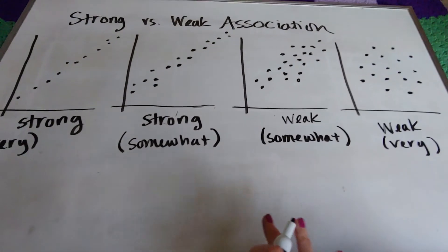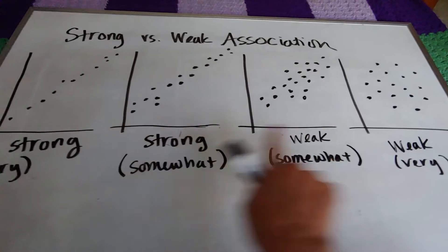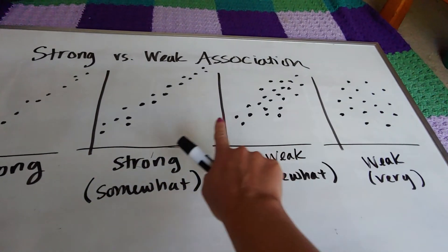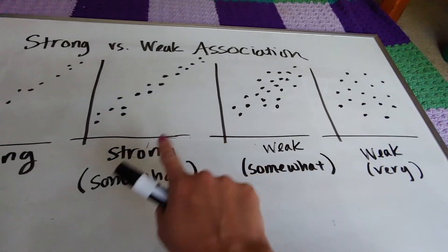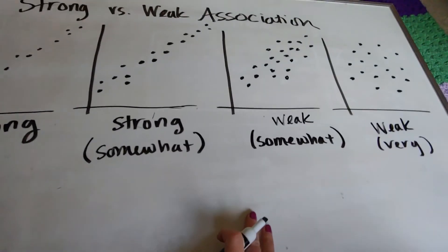So sometimes students feel great about kind of eyeballing it and calling it very strong to very weak. Others get a little bit nervous in this gray area, like how do you know? How can you decide? Well, here we're just eyeballing it. But in the next video,